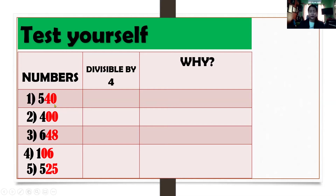Okay, let us review first. If the last two digits is divisible by 4, and the last two digits also ends in 0, it is divisible by 4. Okay, you may now push in.